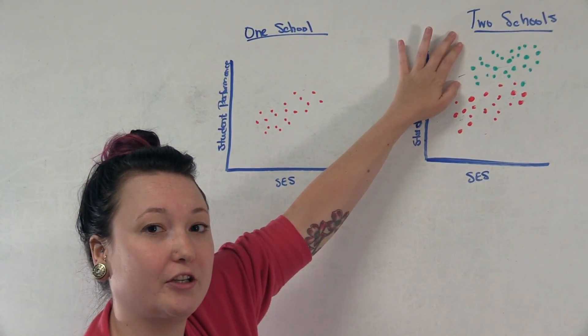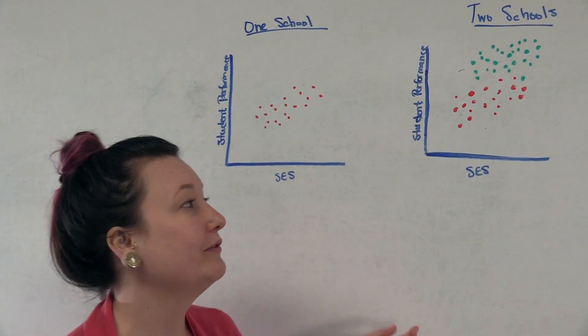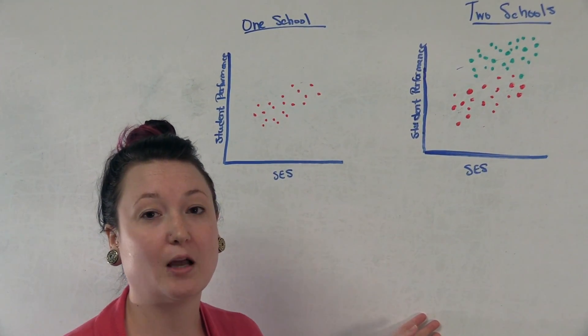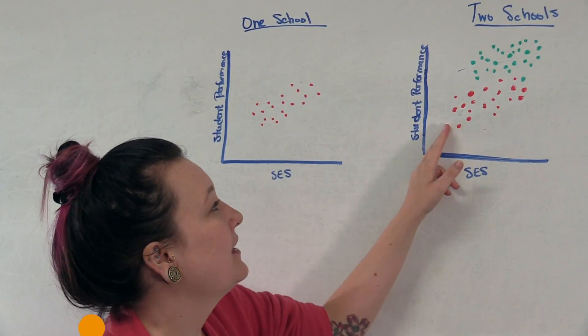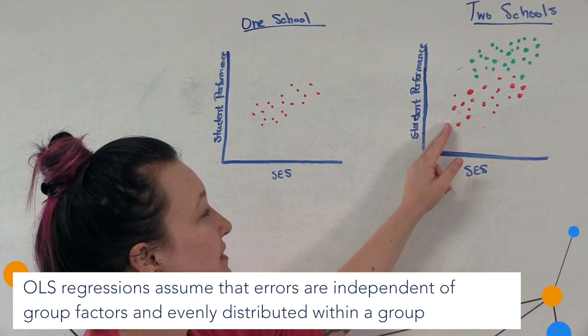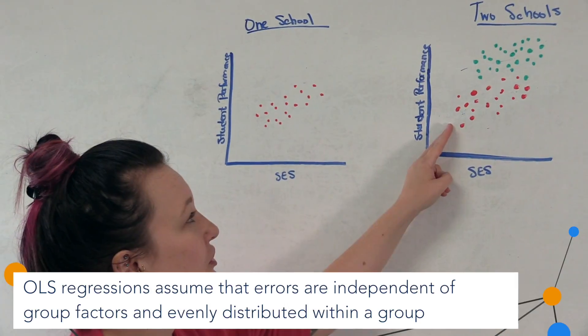This poses a problem with estimation. Using a standard OLS, we're violating two of the major assumptions. The assumptions are that the errors are going to be independent of the groups and that they're equally distributed.